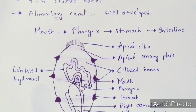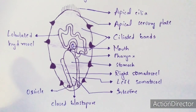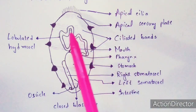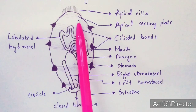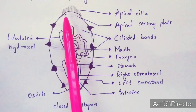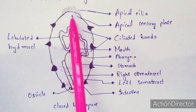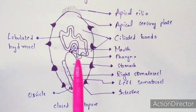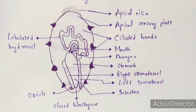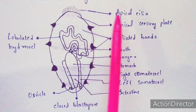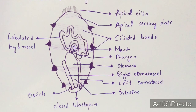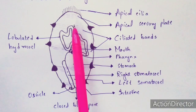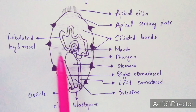In the diagram of the doliolaria larva, the apical tuft — the sensory part — cannot be seen with the naked eye and is only visible with an electron microscope. The apical sensory plate has apical cilia attached to it, similar to how hair is attached to a human head. These apical cilia play a major role in catching food and in attaching the larva to rocks. The purple dotted lines in the diagram represent the ciliated bands.